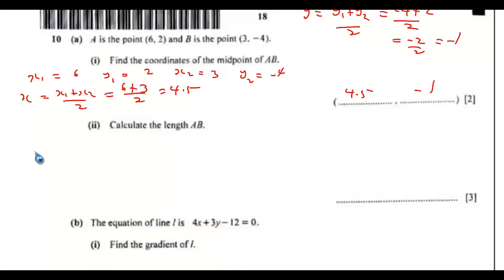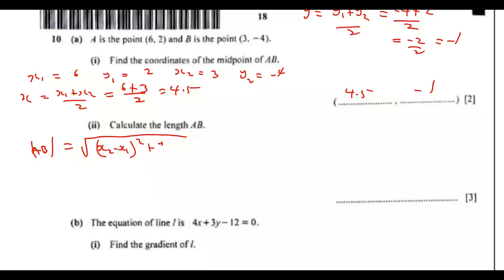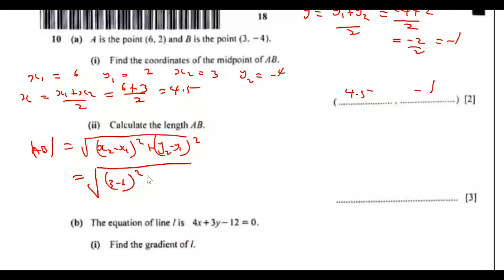Part ii: calculate the length AB. The length AB equals the square root of (x2 minus x1) squared plus (y2 minus y1) squared. Keying in the values: square root of (3 minus 6) squared plus (negative 4 minus 2) squared.